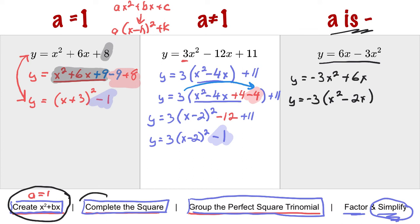Now I'm going to complete the square. So y equals negative 3(x squared minus 2x). Half of 2 is 1. 1 squared is 1. So I'm going to add it and take it away. Add 1 minus 1.